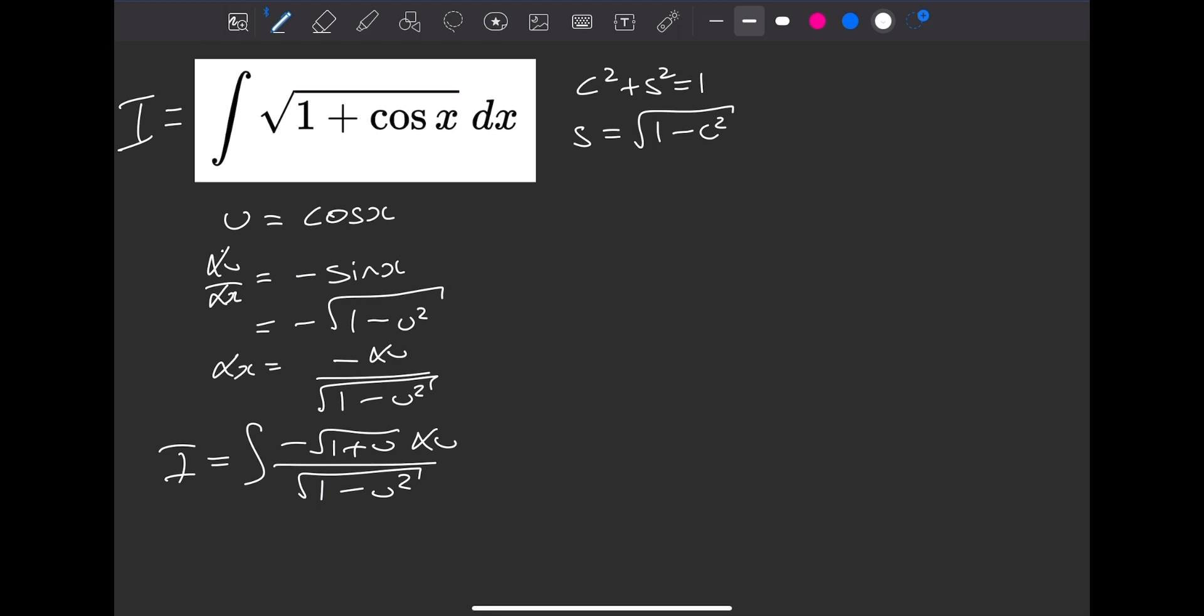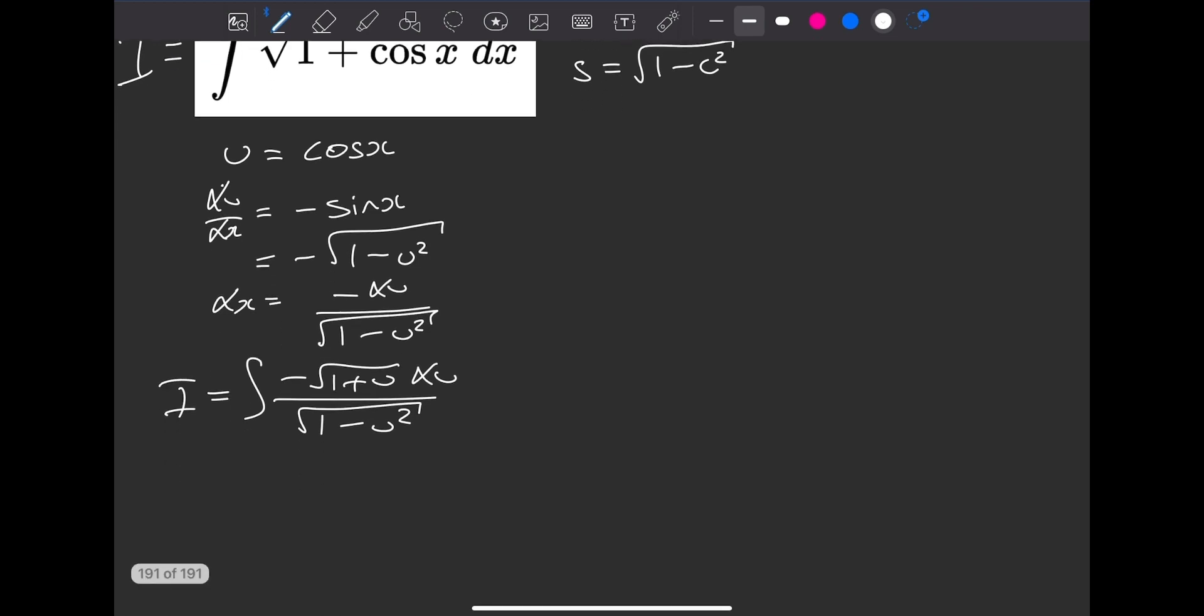So now our denominator, the bottom of the fraction, is difference of two squares. So we can expand our square root out to have the square root of 1 minus u and the square root of 1 plus u. The top will still have the minus square root of 1 plus u, integrated with respect to u.